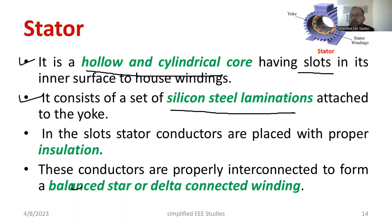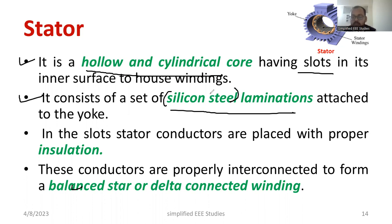Why is it arranged in a laminated fashion? Because the eddy current loss has to be minimized. Due to eddy current, there will be a large amount of heat losses, so it is better to use silicon steel lamination to minimize the eddy current loss. Additionally, silicon steel has a very low value of hysteresis, which means hysteresis loss is also reduced. For both these reasons, silicon steel with lamination is used.